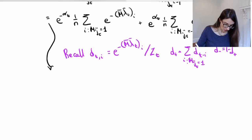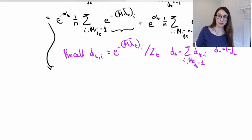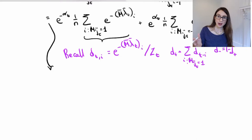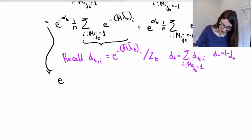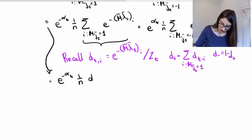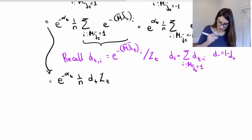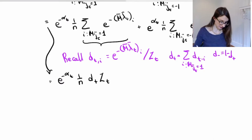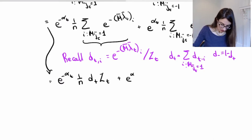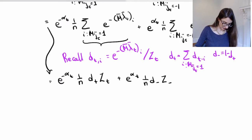With that notation, what I have is that this unnormalized expression — summed over correctly classified points — is unnormalized d_plus. So I end up with e to the negative alpha_t times (1/n) times d_plus with the normalization factor, plus e to the alpha_t times the d_minus term. Now, Z_t is just the normalization factor — it makes sure that we have a discrete probability distribution. So we end up with Z_t, which is exactly the exponential loss, except for the factor of 1/n.